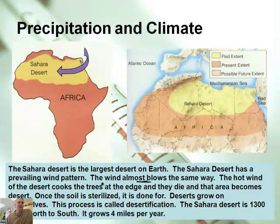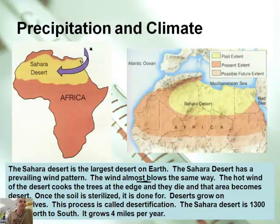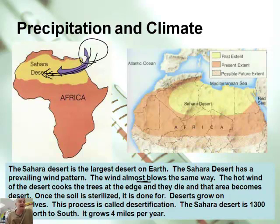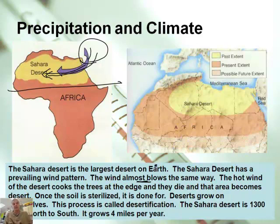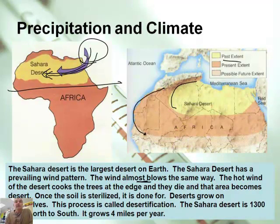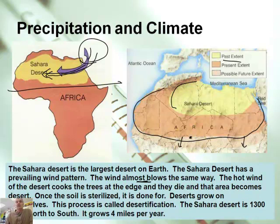The hot wind of the desert cooks the trees on the edge and they die when the air becomes desert. Basically, the wind comes kind of from the Middle East right here. Since the air mass is blowing across land, there's no moisture for it to pick up, so it sends dry, hot air because the equator is about right here. It just makes the Sahara Desert. Interestingly, the Sahara Desert is growing at about four miles per year, and it's headed kind of southward.